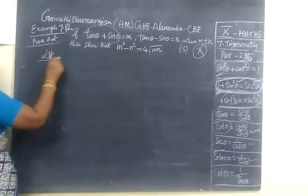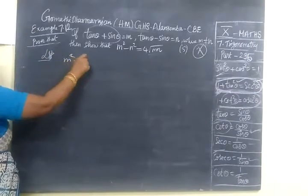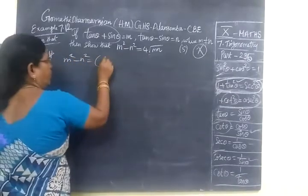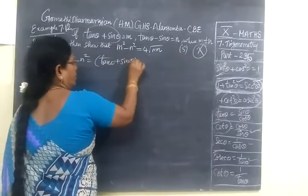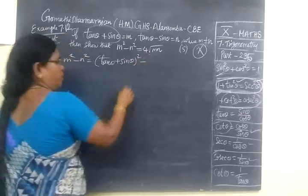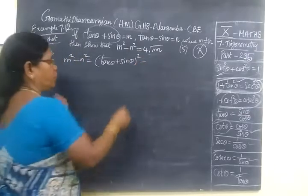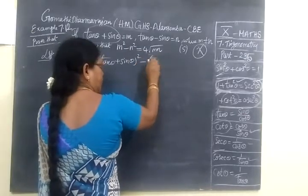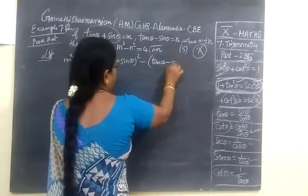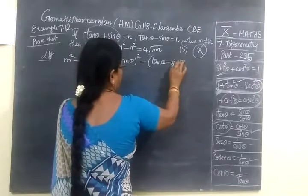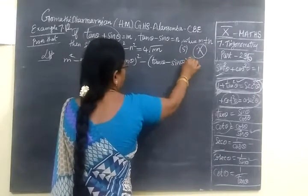So, first we are taking LHS. M squared minus N squared. So, this equals for M, substitute tan theta plus sin theta whole square. Minus, you put one bracket, tan theta minus sin theta whole square.